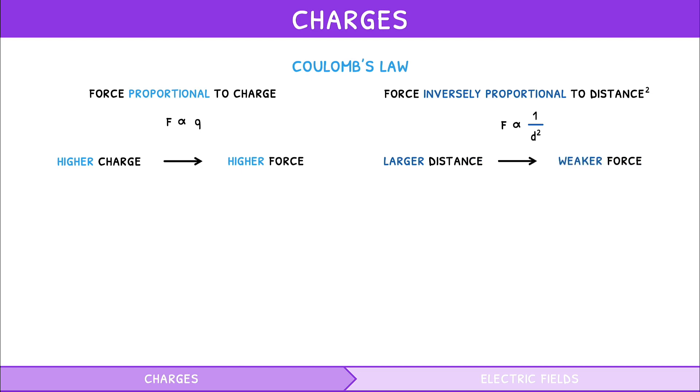The formula for this is, electrostatic force equals the Coulomb constant times charge 1 times charge 2 divided by distance squared. The Coulomb constant's value in this equation is given as 8.99 times 10 to the 9 newton meters squared per Coulomb squared.